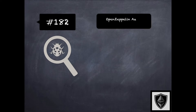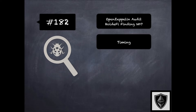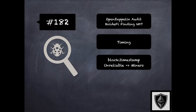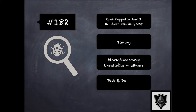Finding 182 is another finding from OpenZeppelin's audit of Holdify, where the concern was that as part of some calculations and time checks, it used block timestamp, which is unreliable because timestamps can be slightly altered by miners to favor them in contracts that have logic depending strongly on them.